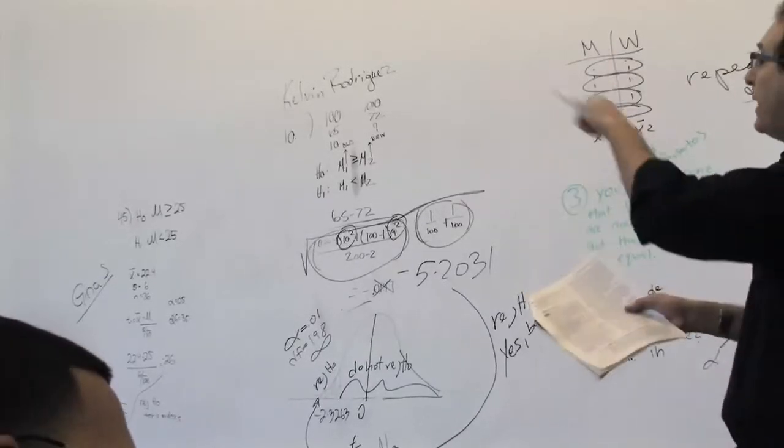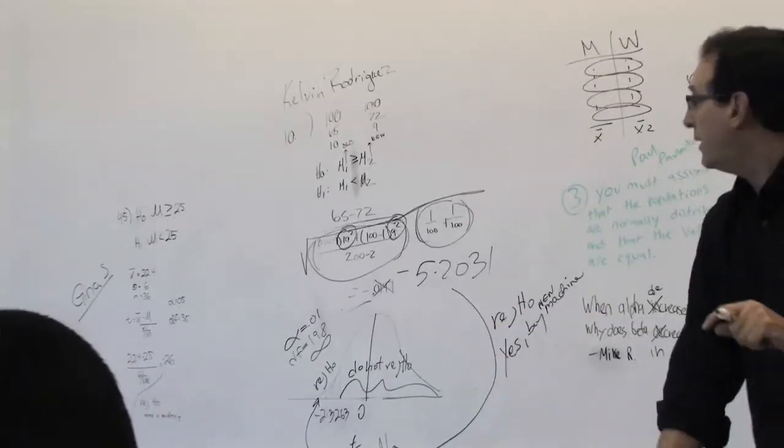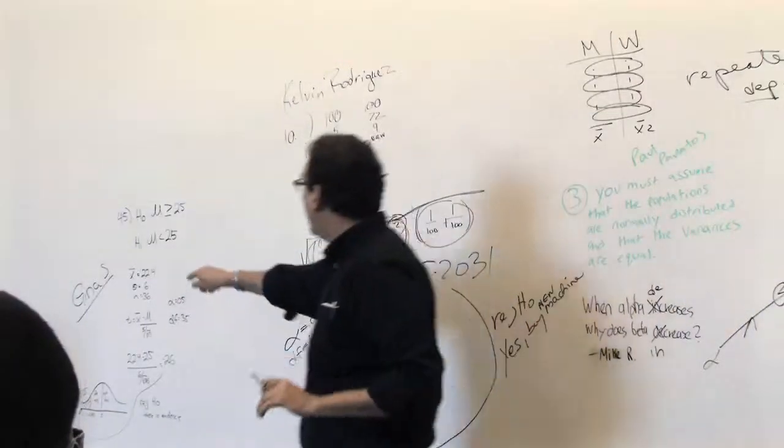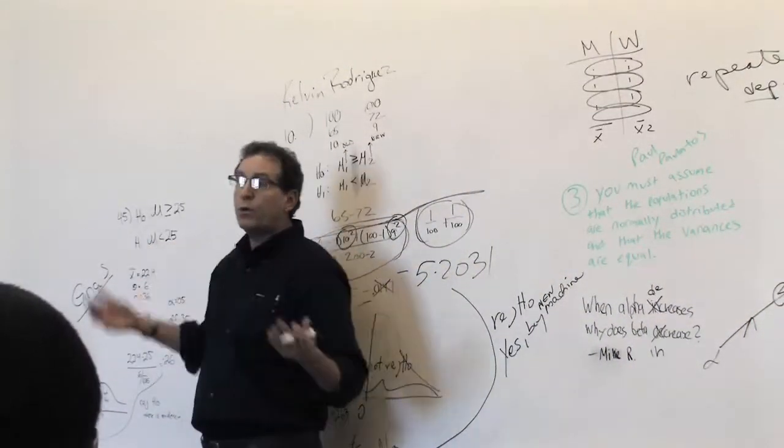The only quibble might be, maybe she got it backwards, so let's see. Is there evidence the population has been reduced below 25? Well, thank God for everybody this is really her. This is correct. The mu below 25, because is there evidence means we're talking about the H1.